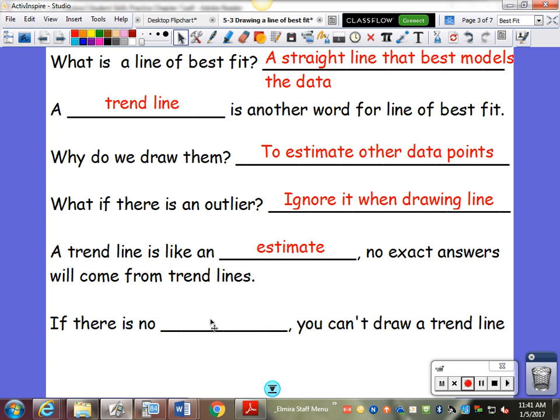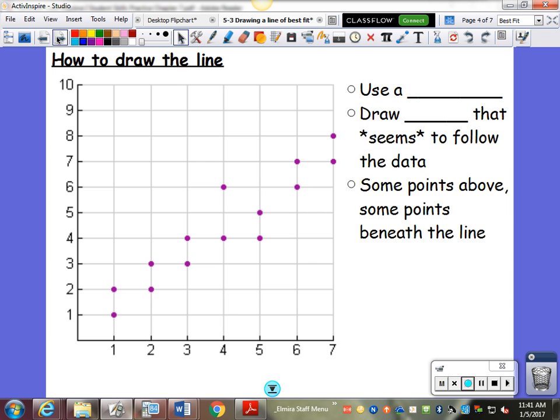Now, important to remember this will come up on your homework. We threw a couple curve balls in there. We have some data that does not make a particular pattern. It doesn't go up or down. It's no association. It's kind of like your shoe size predicting how you're going to do in math. There's no pattern to that. And if there's no pattern to the data, there's no association, you cannot draw a trend line. Very important.